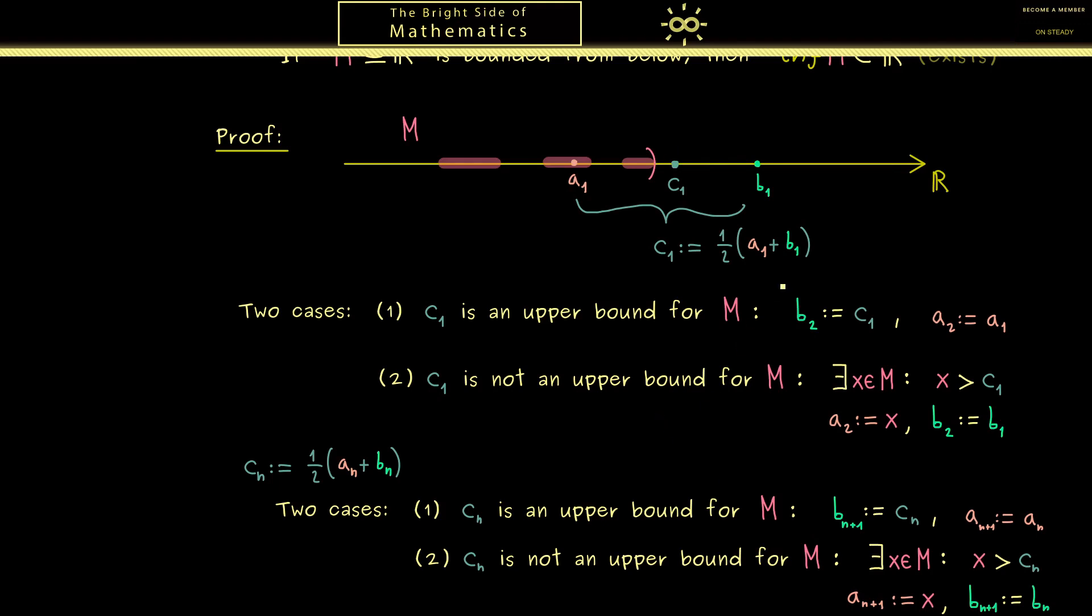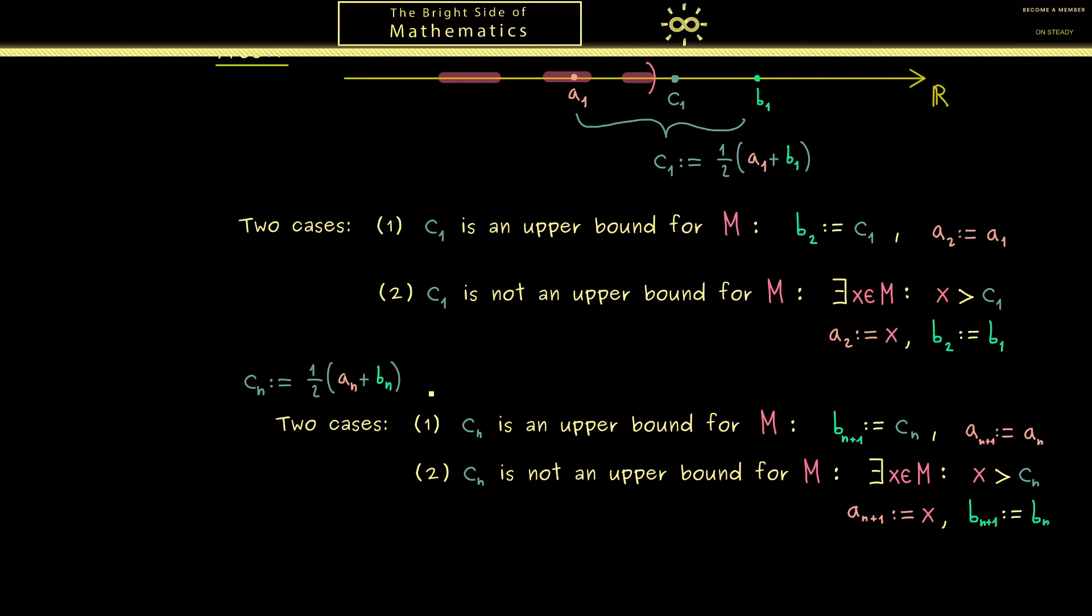Therefore the only thing that remains to show is that the sequence b_n is indeed a Cauchy sequence. However this is not hard to see because we have the following estimate.